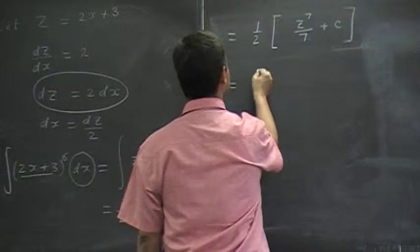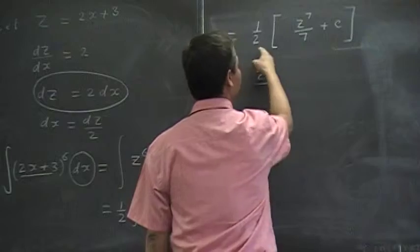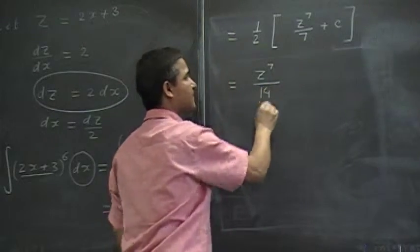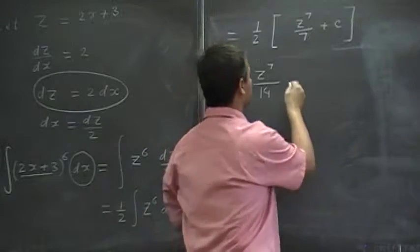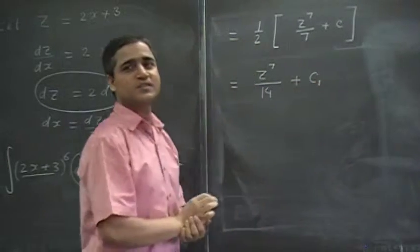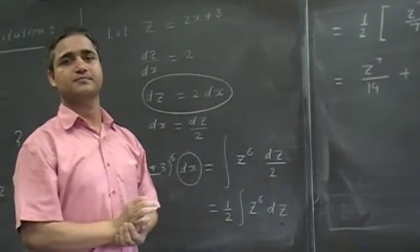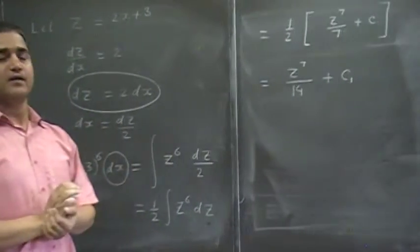So, this is z to the 7 over 14, half times c is another constant, let me say c1. Where c1 is constant of integration. Does it make sense to you? Yes.